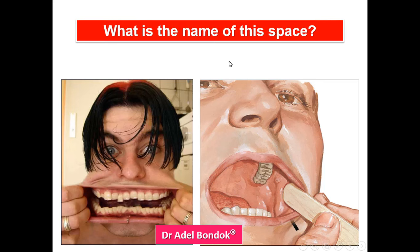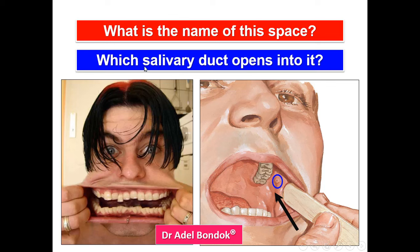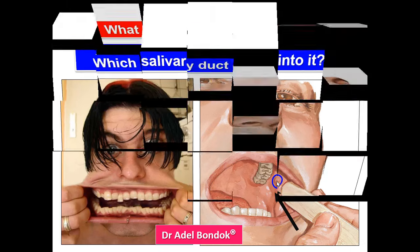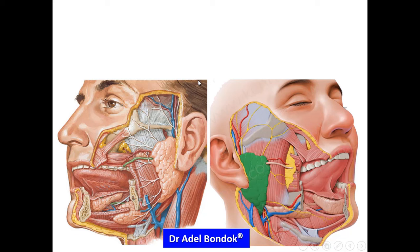What is the name of this space? It's called the vestibule. Which salivary duct opens into the vestibule? It is the parotid duct.